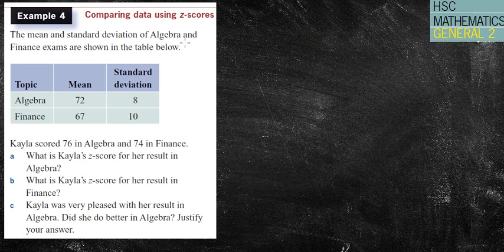The mean and standard deviation of algebra and finance exams are shown in the table below. Kayla scored 76 in algebra and 74 in finance. So that's our scores, that's our mean, et cetera. What is Kayla's z-score for her result in algebra?